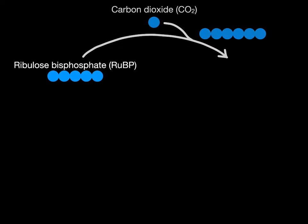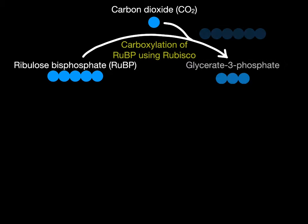We begin the light independent stages of the Calvin cycle with ribulose bisphosphate, otherwise known as RUBP, which is a five carbon molecule. The RUBP combines with carbon dioxide to initially form a six carbon molecule; however, the six carbon molecule is unstable and therefore breaks up and forms a three carbon molecule, glycerate three phosphate. This stage is referred to as carboxylation of RUBP and uses the enzyme Rubisco.